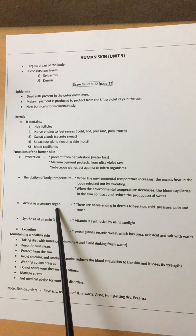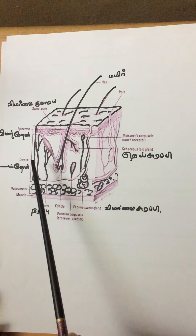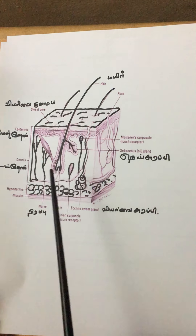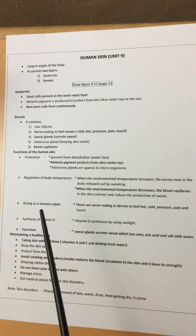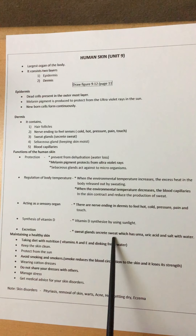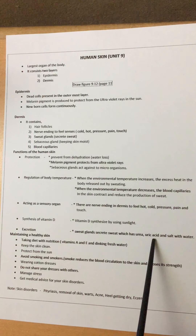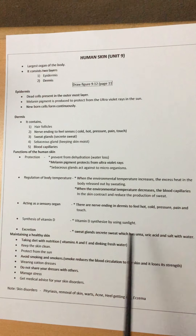The skin also acts as a sensory organ through five types of nerve endings: cold, hot, touch, pressure, and pain. Another function is synthesis of vitamin D — the skin uses sun rays to produce vitamin D. The skin also performs excretion: sweat glands secrete sweat which contains urea, uric acid, and salt (sodium chloride) with water, as studied in the excretion topic.